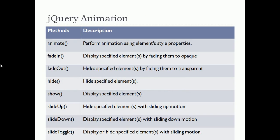There are also jQuery animation methods. The animate method will perform animation using element style properties, and you have to write lots of code. This is more useful for designers than developers. Developers can use the fadeIn and fadeOut methods. The fadeIn method will display the specified element by fading it to opaque — your element appears very slowly — and in fadeOut your element gets hidden by fading to transparent. You have to provide a numerical time value.